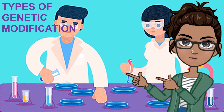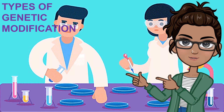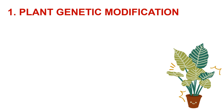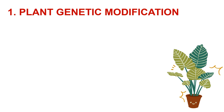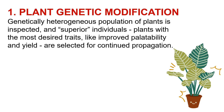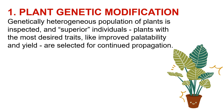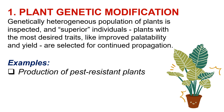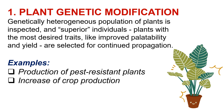Let's have the types of genetic engineering or modification. First is plant genetic modification. Acknowledged at present as plant genetic engineering, plant modification is the easiest method utilized by our wandering ancestors of the past. In this process, a genetically heterogeneous population of plants is inspected and superior individuals with the most desired traits like improved palatability and yield are selected for continued propagation. Examples include production of pest-resistant plants and increase of crop production.